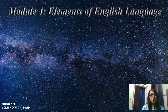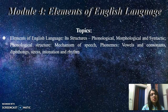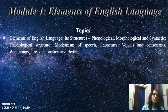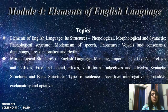Module 4 is Elements of English Language. Under this title, the topics are elements of English language, its structures — phonological, morphological and syntactic. Under phonological structures, we will be doing mechanism of speech, phonemes, vowels and consonants, then diphthongs, then stress, intonation and rhythm. And under morphological structures of English language, we will be learning about the meaning and importance and types of morphological structures.